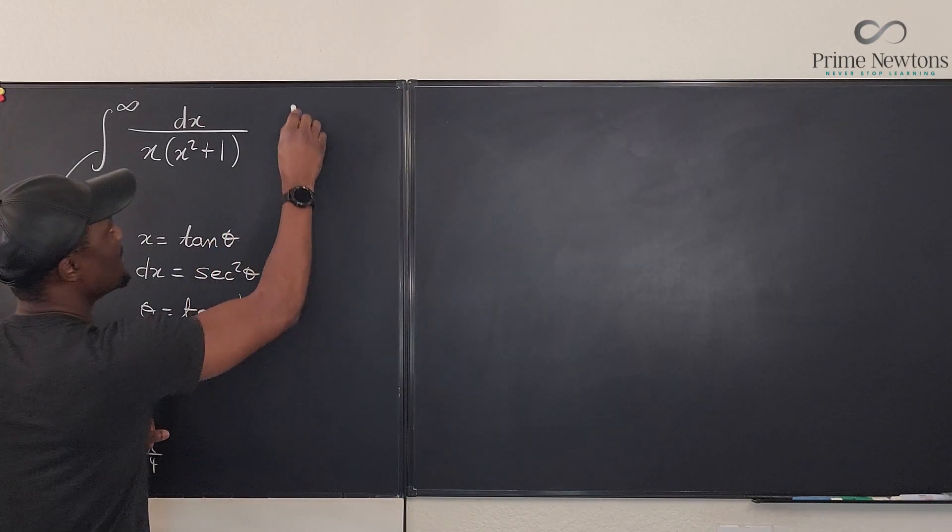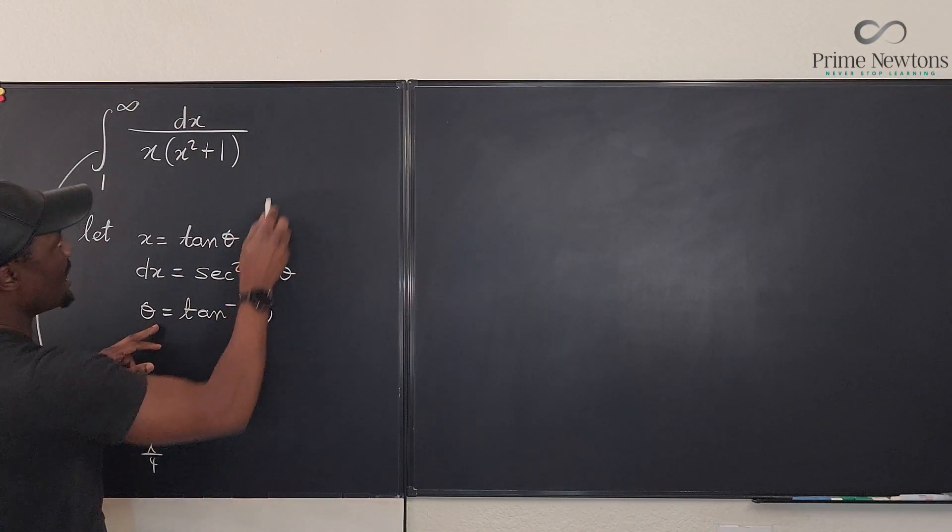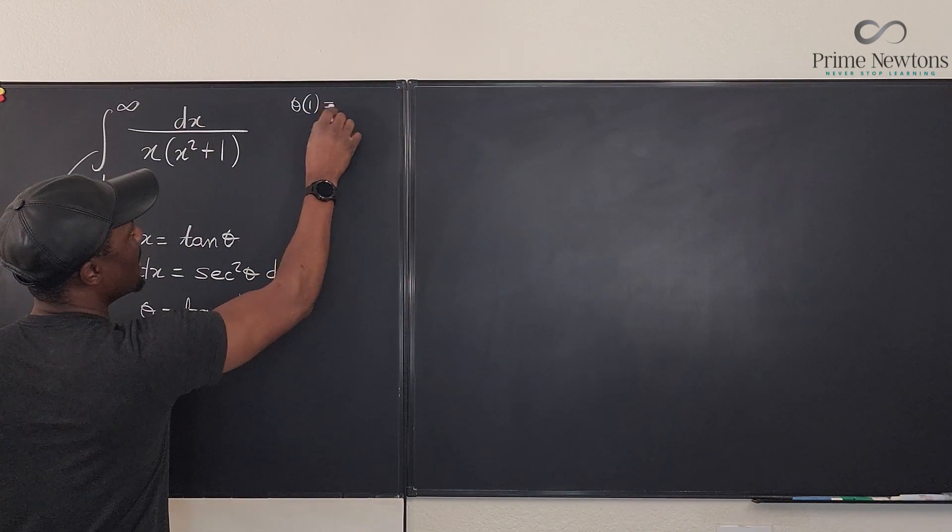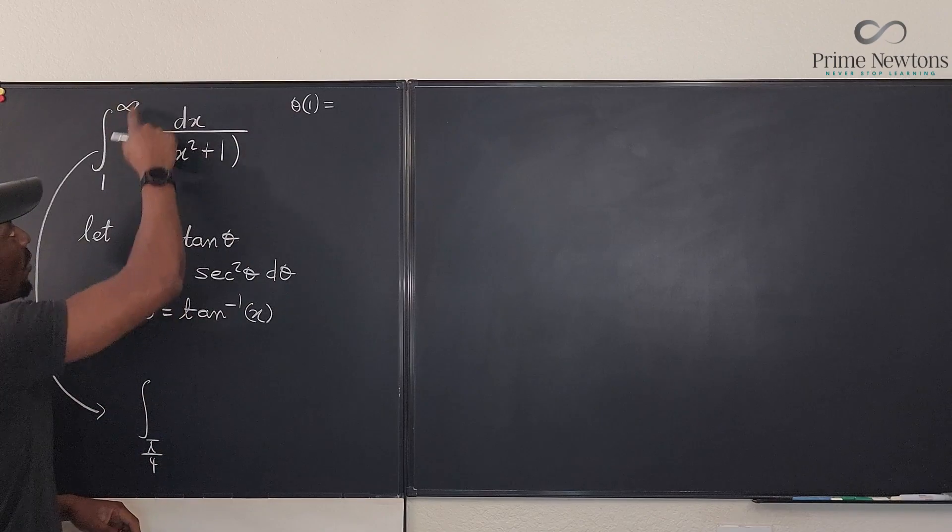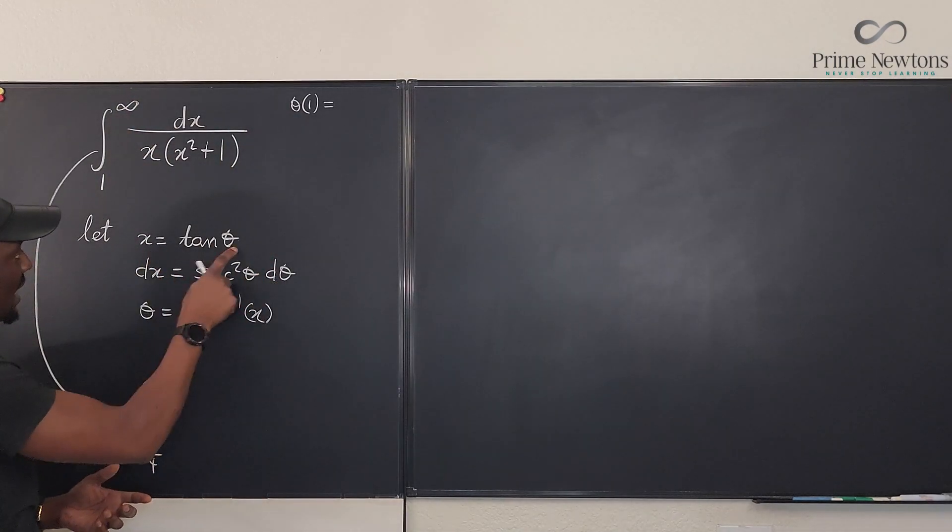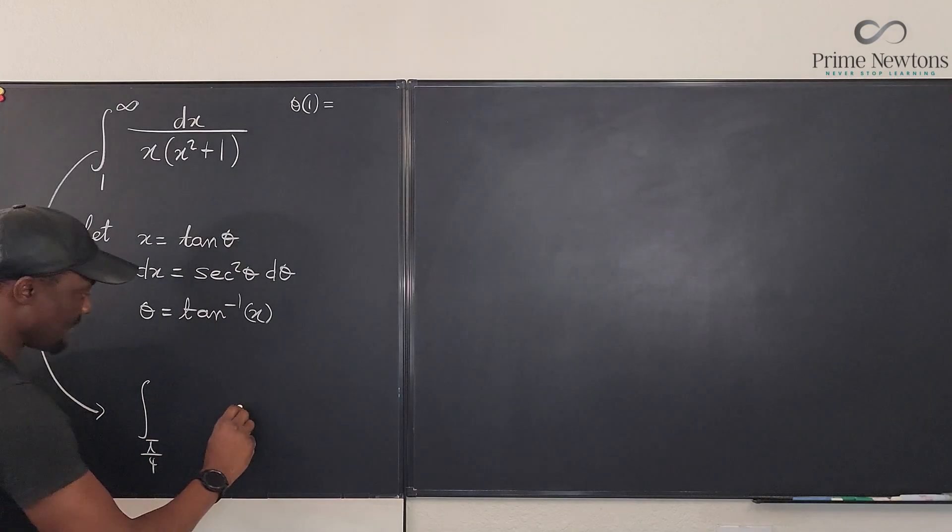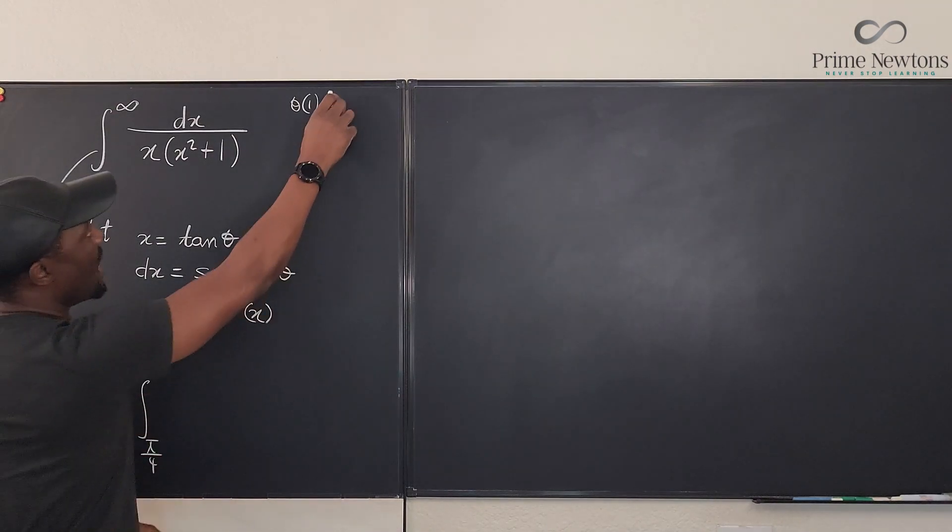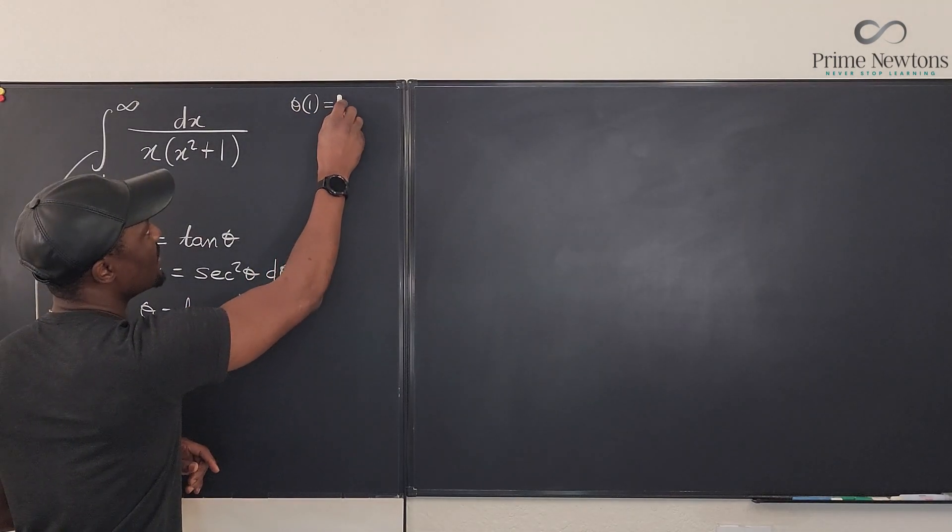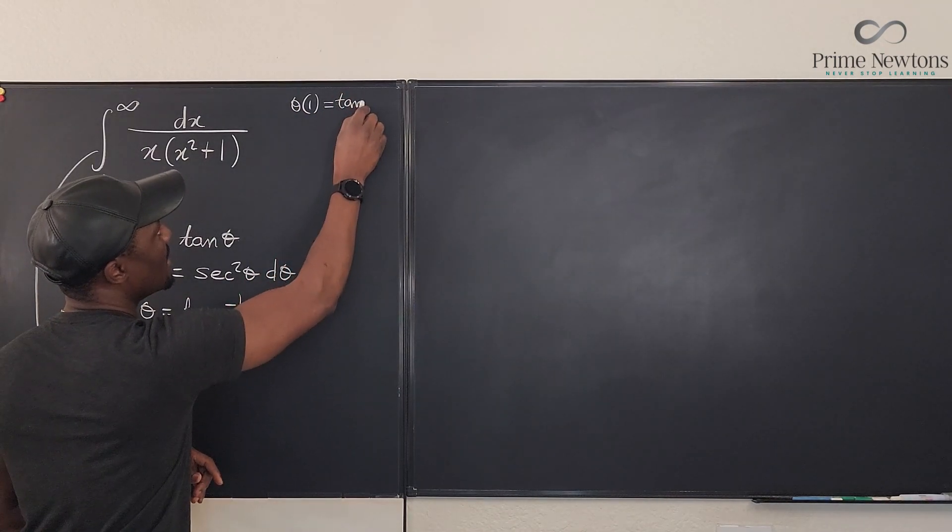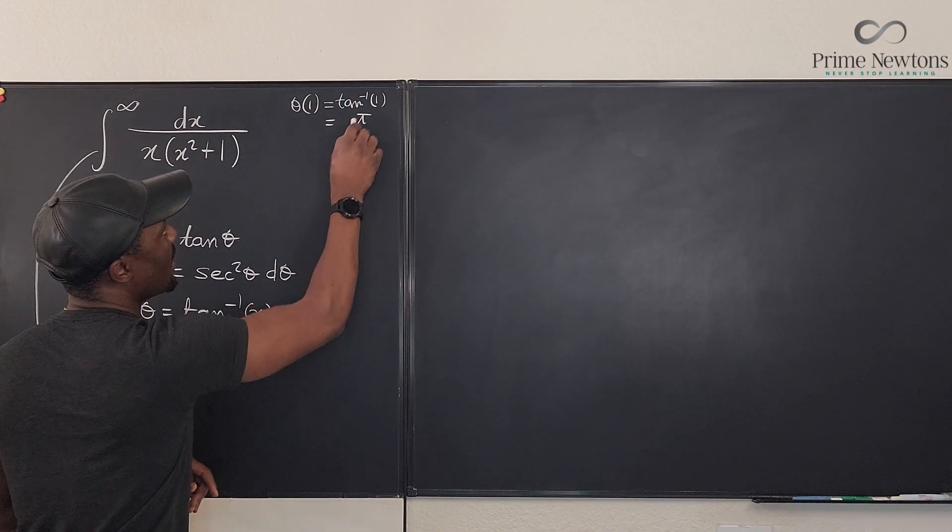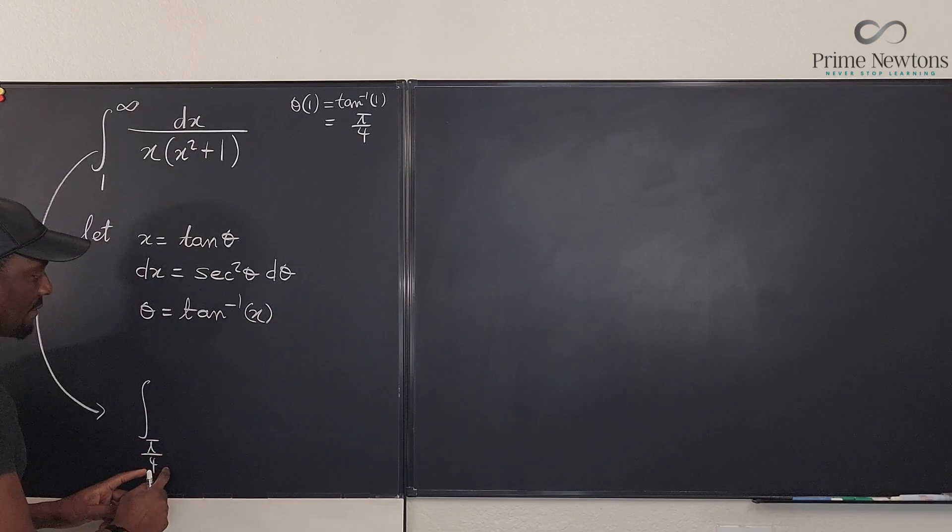What would be the top part? We're going to say that when θ is evaluated - because we're changing now the variable of integration from x to θ - what we have here is going to be dθ. We have to evaluate this, and we just evaluated for one. So θ evaluated at one will be arctan of one, and that's going to be equal to π over four.